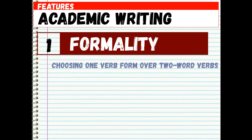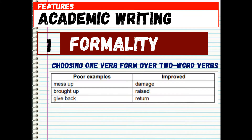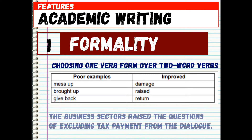Formality is also achieved by choosing one verb form over two-word verbs — 'mess up' becomes 'damage,' 'brought up' becomes 'raised,' 'give back' becomes 'return.' The sample sentence is: 'The business sectors raised the questions of excluding tax payment from the dialogue.'